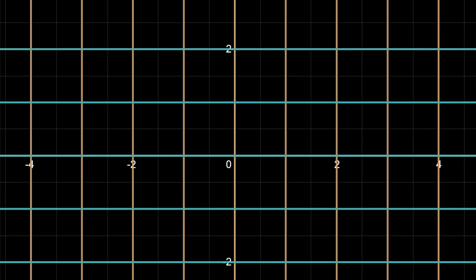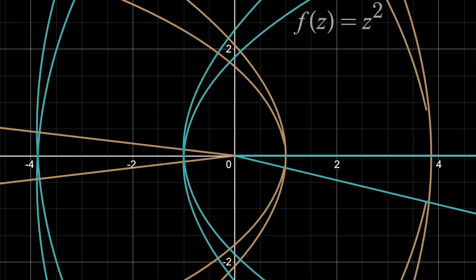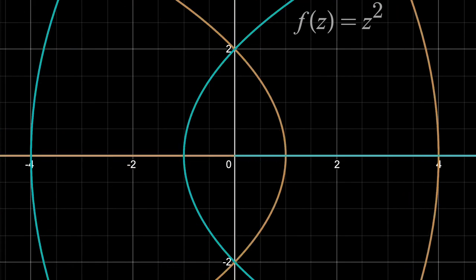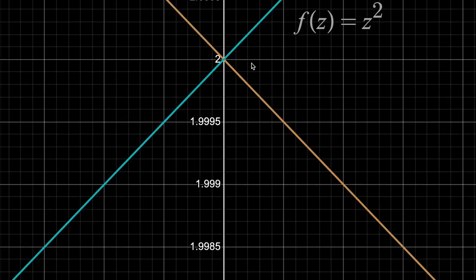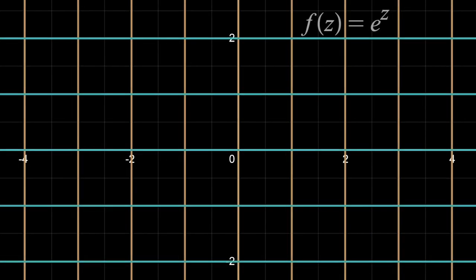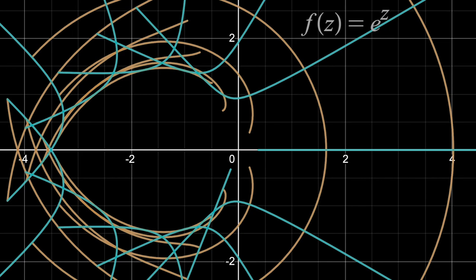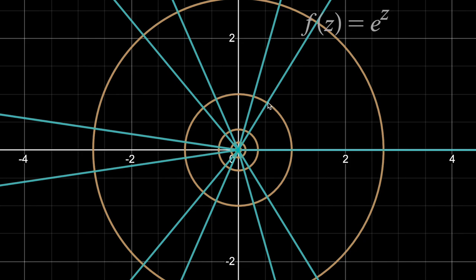So if we map those to their outputs, then those right angles should be preserved at all points, where the derivative is non-zero. I'll use z squared here, and pay attention to, like, this intersection here. After the transformation, those output curves still meet at right angles, and when you zoom in, that becomes more obvious. If we do the transformation with e to the z, then same thing. It looks messier, but all those grid lines transform to either circles centered at the origin, or diagonal lines, and those all meet at right angles.